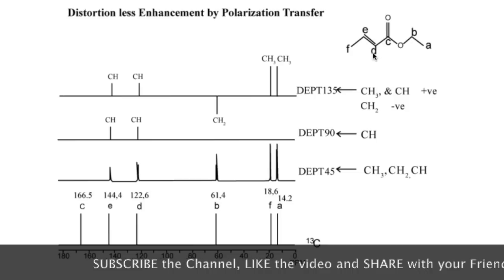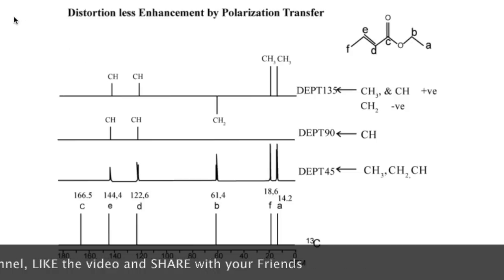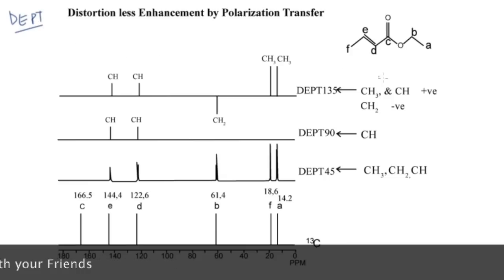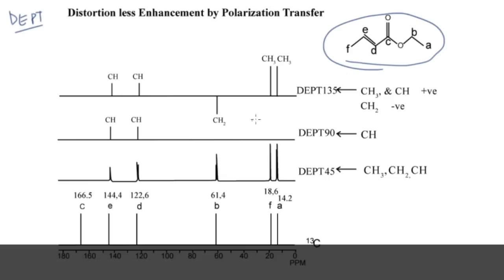Here is the DEPT spectra of a given compound. This compound has six carbons, labeled as a, b, c, d, e, and f. In the proton-decoupled carbon-13 NMR, you are getting peaks for all of them — a peak for a, for b, for c, for d, for e, for f — so for all six carbon atoms you are getting a peak.